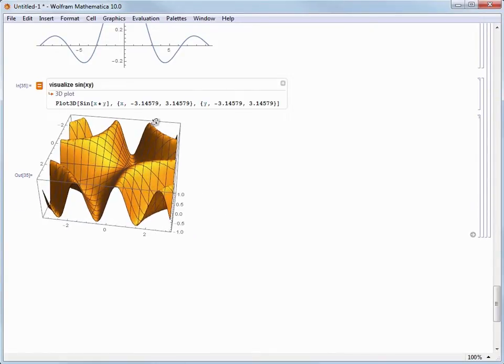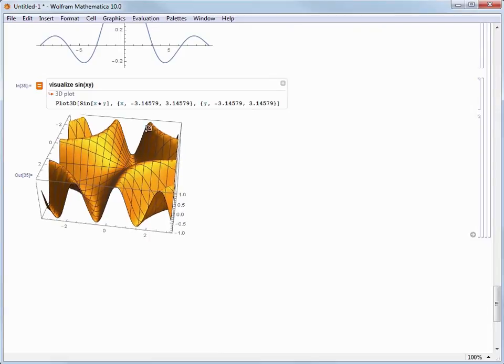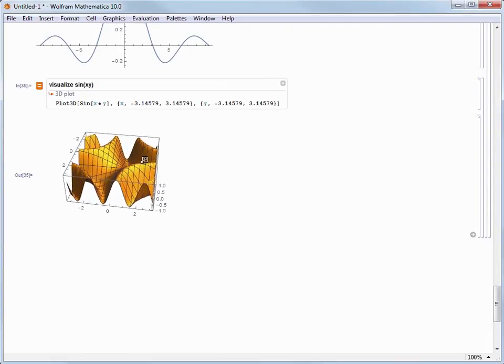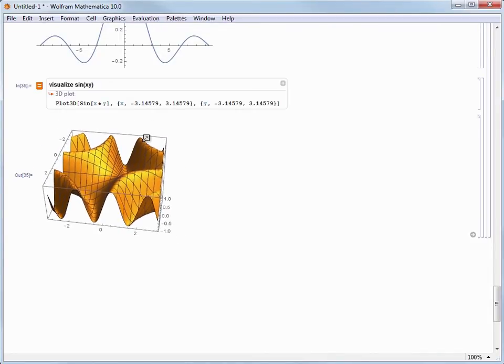You can also zoom in and out by holding down the Alt key, or Command key on Mac. When you do this, the cursor turns into a zoom icon, and if you click and drag while holding down Alt, you will zoom in and out of that plot.